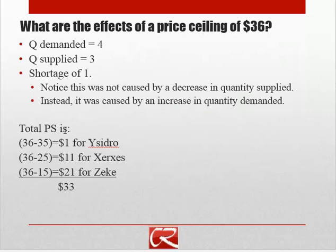We can work through producer surplus pretty easily. Ysidro has $1 of producer surplus, Xerxes has $11, and Zeke has $21, giving us $33 worth of producer surplus. Notice we've engineered this just right — we have the knowledge to push the price down to $36 without accidentally pushing Ysidro out of the market and causing him to no longer be willing to supply.